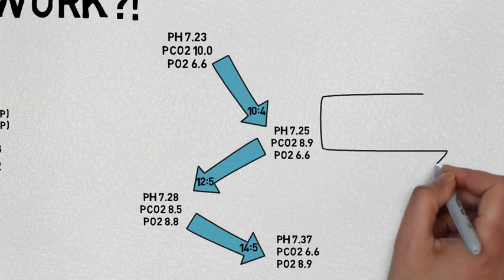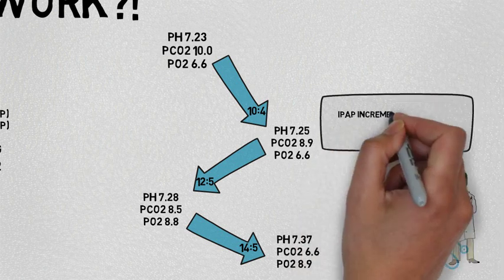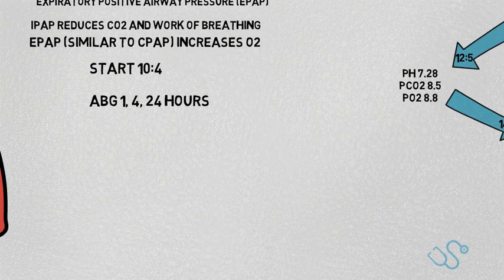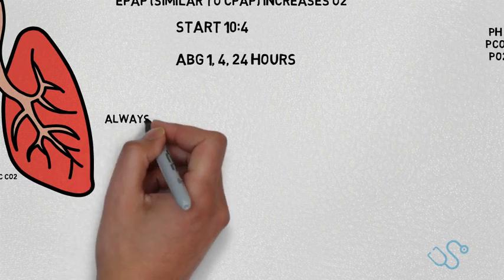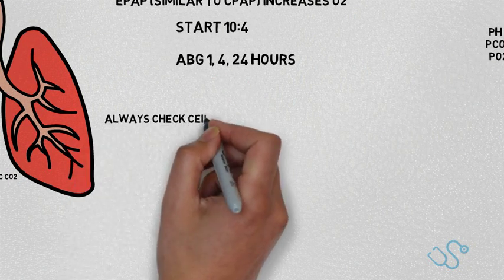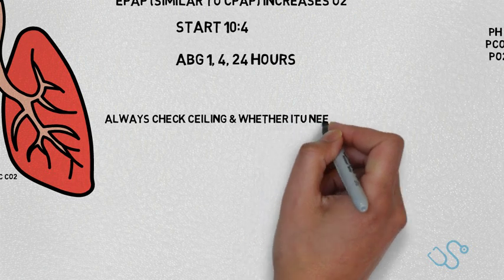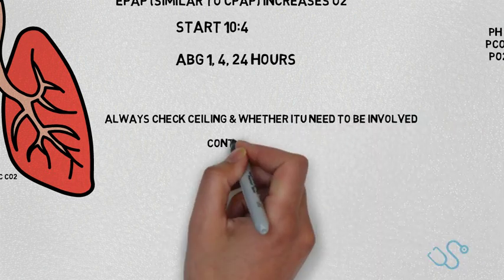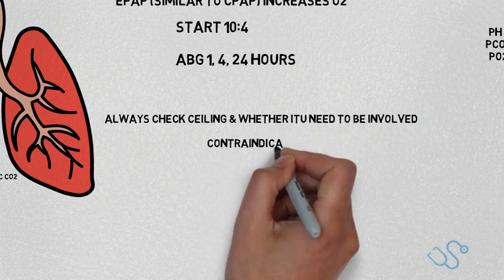At this point, make sure the patient is on cardiac and respiratory monitoring, repeat the gas in four hours, and take it from there. However, if the patient's gases or clinical condition deteriorate, it's probably worth checking the ceiling of care, whether ITU needs to be involved early, and considering intubating and ventilating.